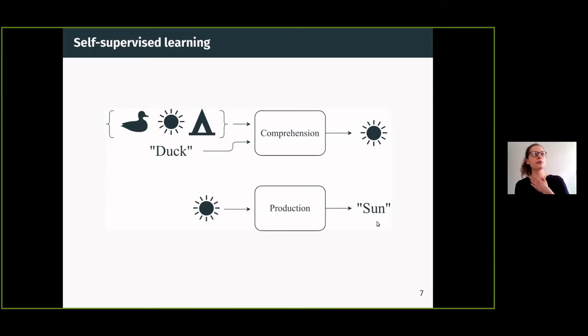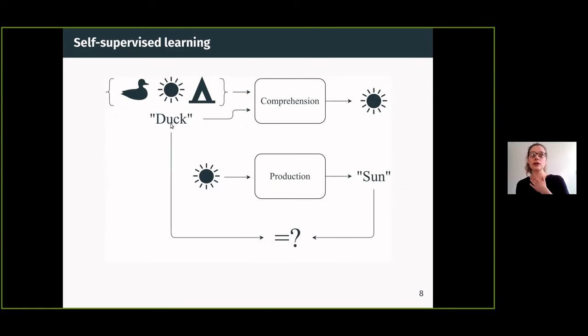How can we use this for learning? We just compare the input at the start to the output. In this case, the input to the comprehension module does not match the output of the production module. Since this doesn't match, we know that we made some mistake and we need to move away from this matching. We don't really know where the mistake is—either the comprehension module made a mistake or the production module—but in any case, in its entirety it didn't perform correctly.